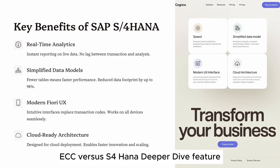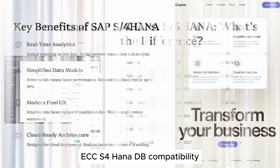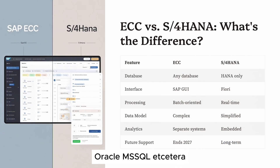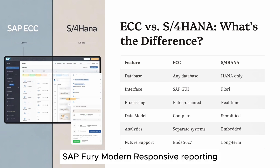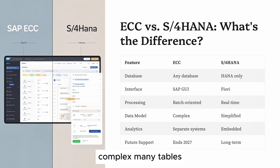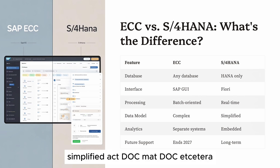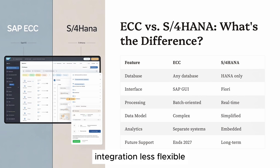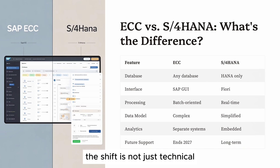ECC vs. S/4 HANA — a deeper dive. Feature comparison: DB compatibility — ECC supports Oracle, MS SQL, etc., while S/4 HANA runs only on HANA. UX — ECC uses SAP GUI, S/4 HANA uses SAP Fiori, which is modern and responsive. Reporting — ECC is slow and batch-based; S/4 HANA is real-time. Data model — ECC has complex, many-table structures; S/4 HANA is simplified with unified documents. Integration — ECC is less flexible; S/4 HANA integrates easily with BTP, APIs, and AI. The shift is not just technical, it's strategic.